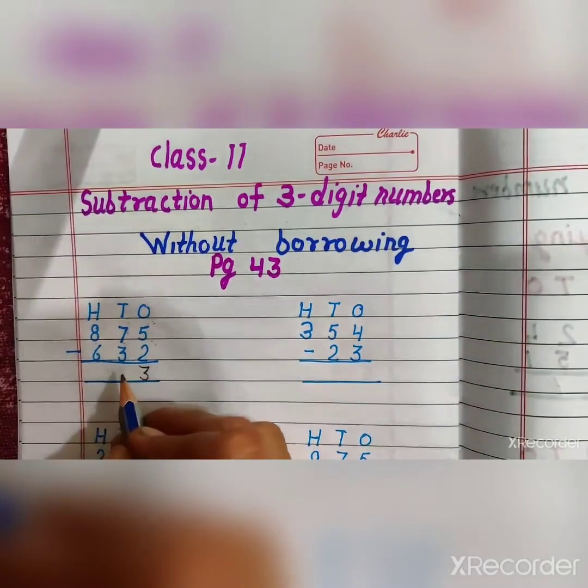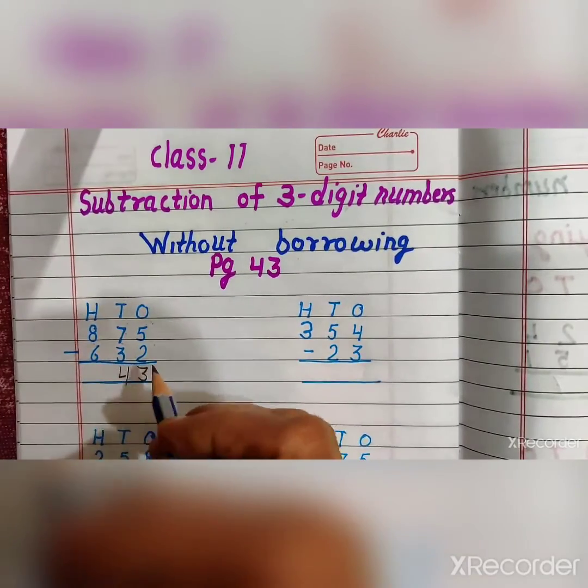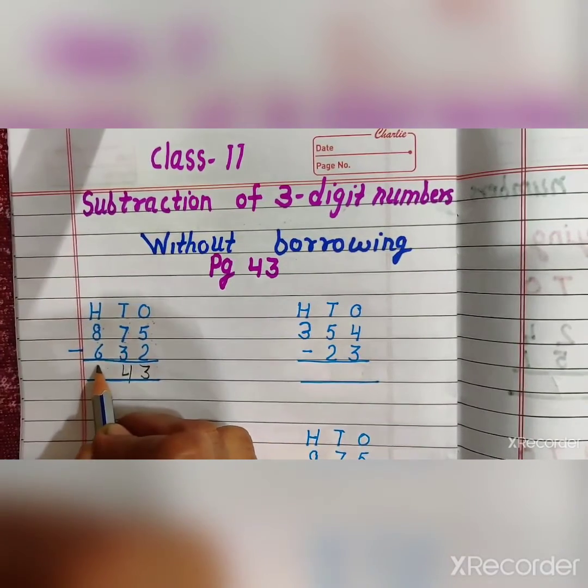7 minus 3 is equal to 4. And next, hundred's place. 8 minus 6 is equal to 2.